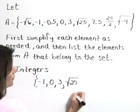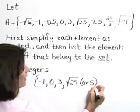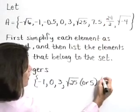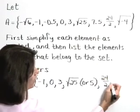So let's include the square root of 25, or 5, and this 24 halves, which simplifies to 12.